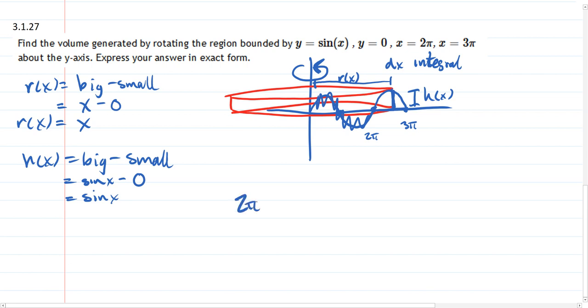We have our circumference, 2π r times the height. We integrate that from a to b, and this is our volume. A and b is going 2π to 3π. You can bring the 2π out front.